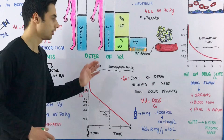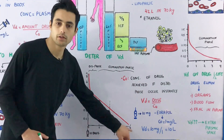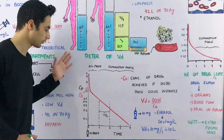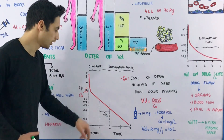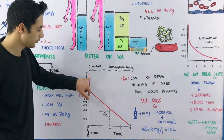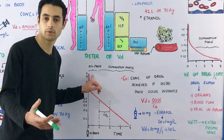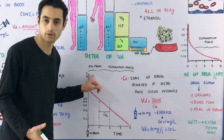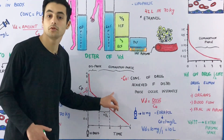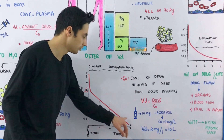Now, how will you determine the apparent volume of distribution? You can do that by plotting a graph of CP versus time — time on the x-axis and the logarithm of plasma concentration (CP) on the y-axis. As soon as you inject the drug the concentration is maximum, then it starts to decrease. The early portion is the distribution phase, when the drug is being distributed into plasma, extracellular fluid, and intracellular fluid. The later portion is the elimination phase, when the drug is delivered to the liver, kidneys, and other eliminating organs.